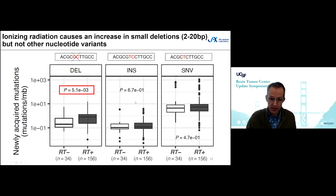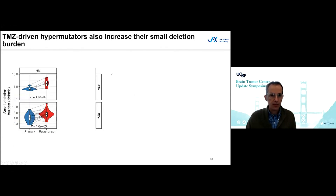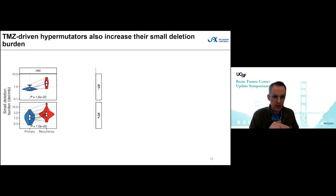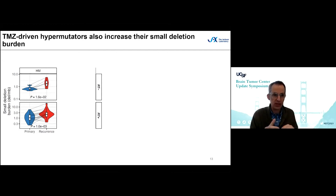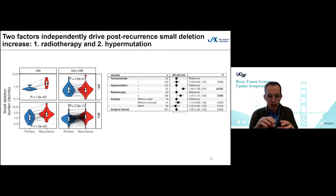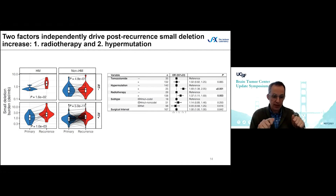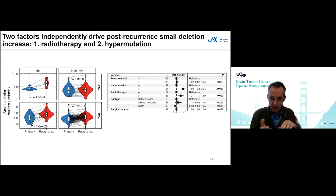This is reminiscent of the effect of temozolomide-induced hypermutation. We can also look at the effect of temozolomide — temozolomide-driven hypermutators also increase their small deletion burden. So temozolomide has its own way of increasing small deletion burden. But the radiation effect we're seeing is clearly independent of temozolomide: we see an increase in small deletion burden in cases treated with temozolomide, cases not treated with temozolomide, and also in hypermutators separately from non-hypermutators, as shown in a multivariate analysis.